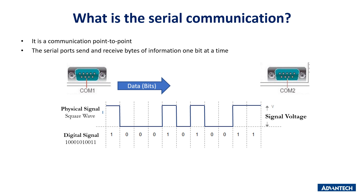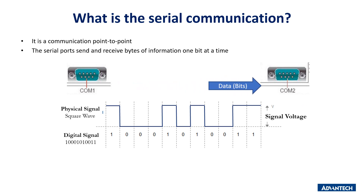What is serial communication? Serial communication is the transmission of data between two ports, or point-to-point. The most important feature is that the port sends and receives only one bit at a time. A typical digital signal in communication can be seen as 1 0 0 0 1 0 1 0 1 0 1 1 — this is called a square wave or pulse signal.